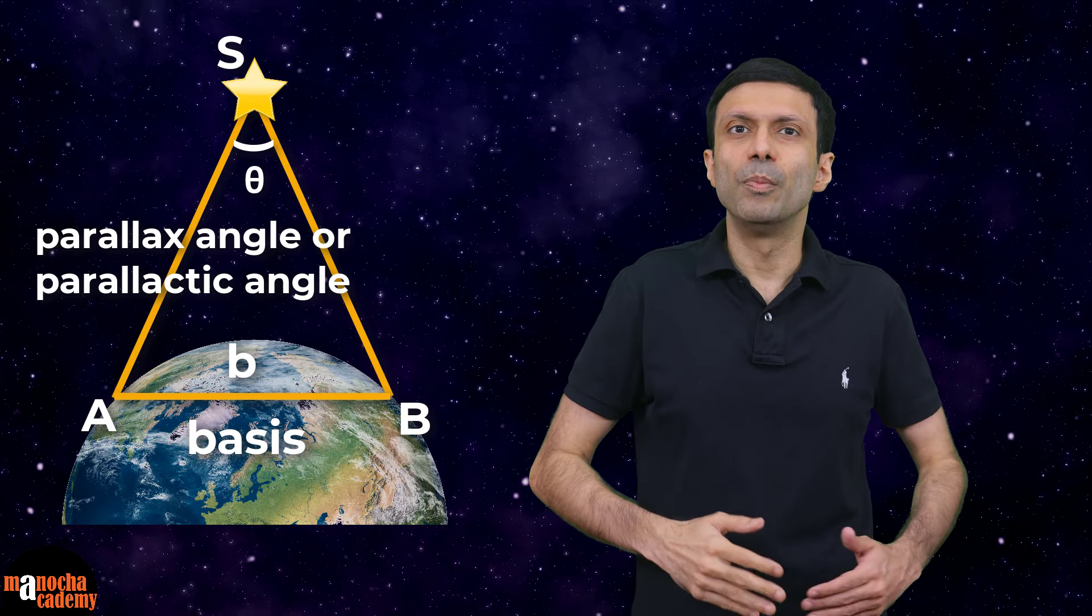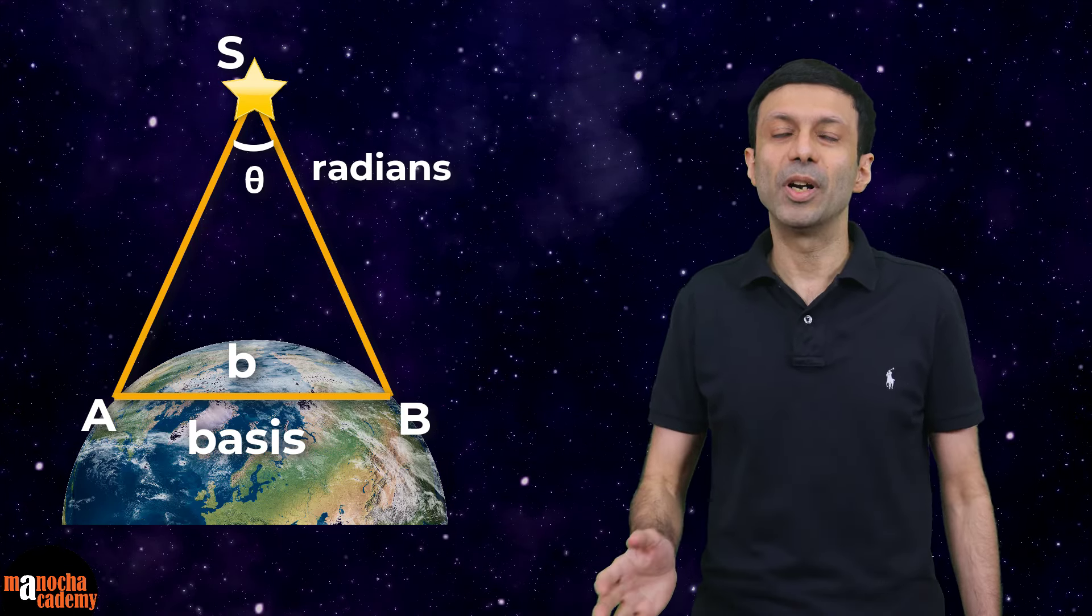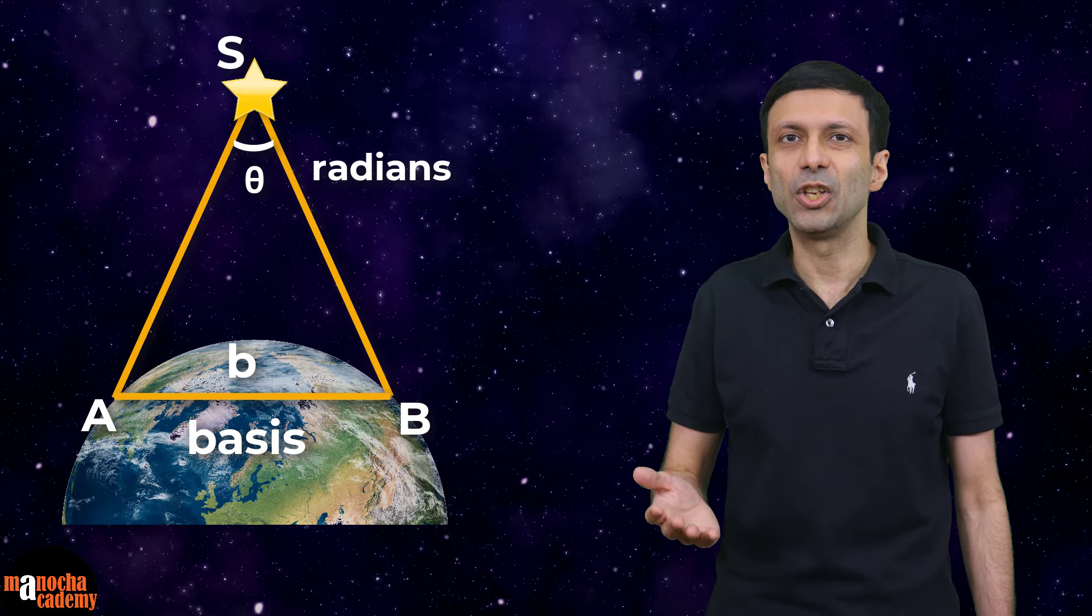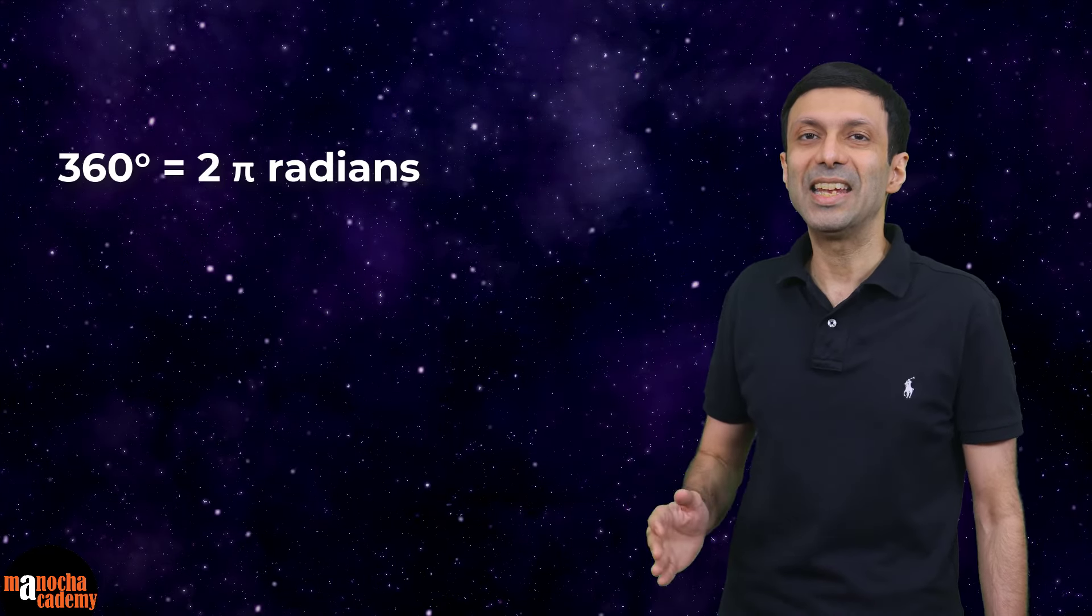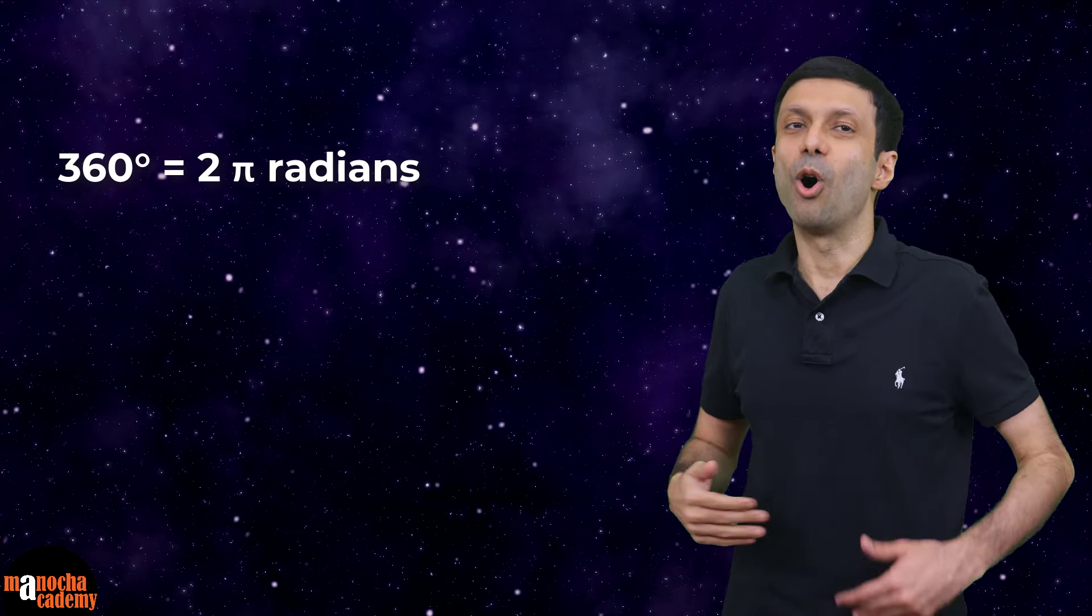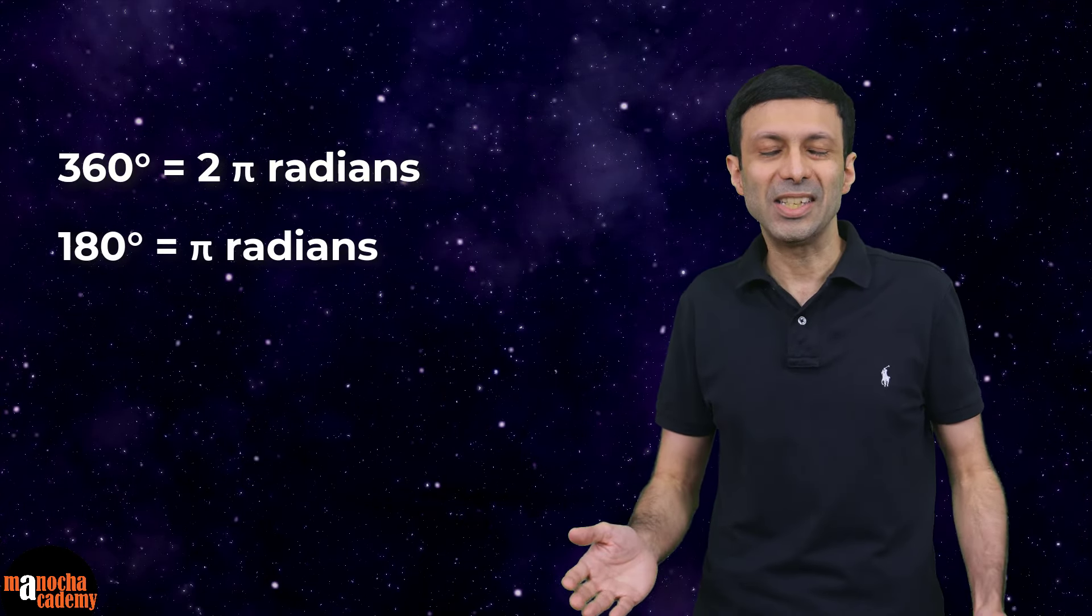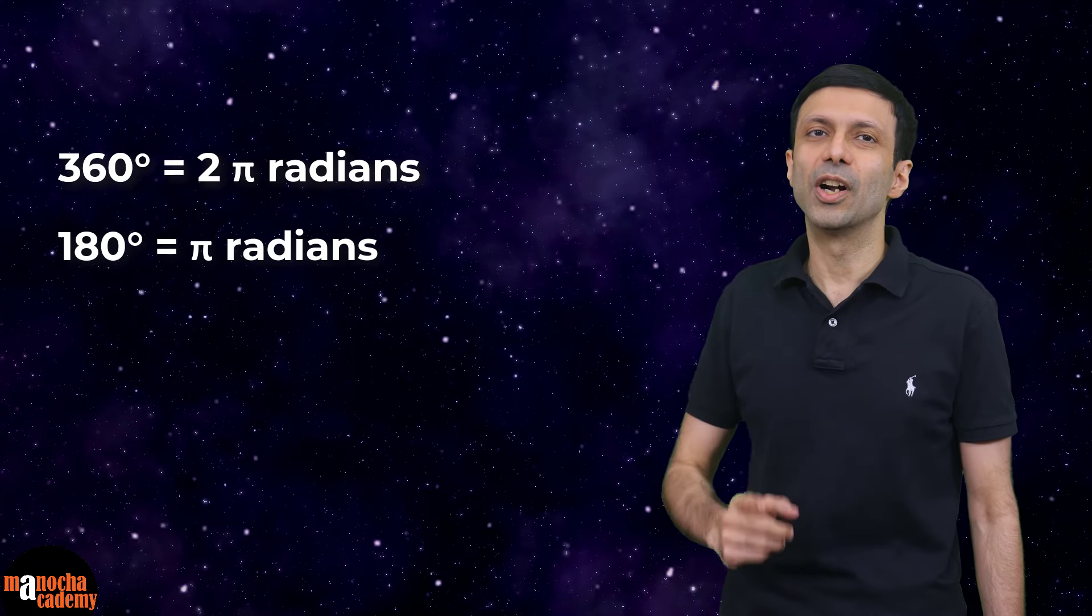This angle should be measured in radians. So if you measure it in degrees, do remember to convert it into radians using this conversion. 360 degrees is 2 pi radians, or you can remember 180 degrees is pi radians. So use this conversion and convert your angle from degrees to radians.